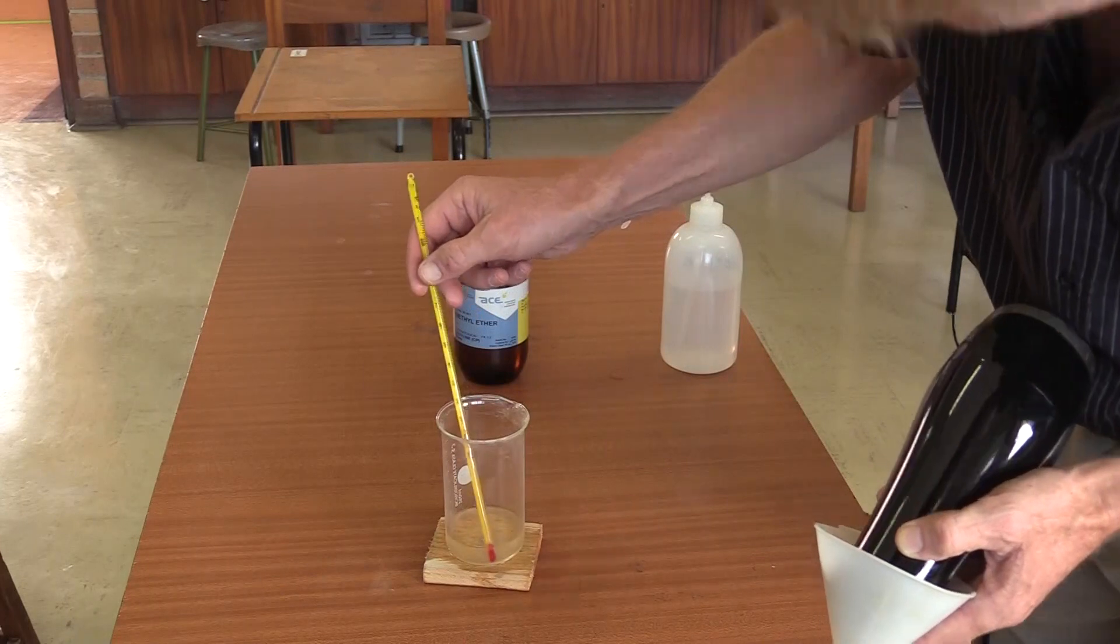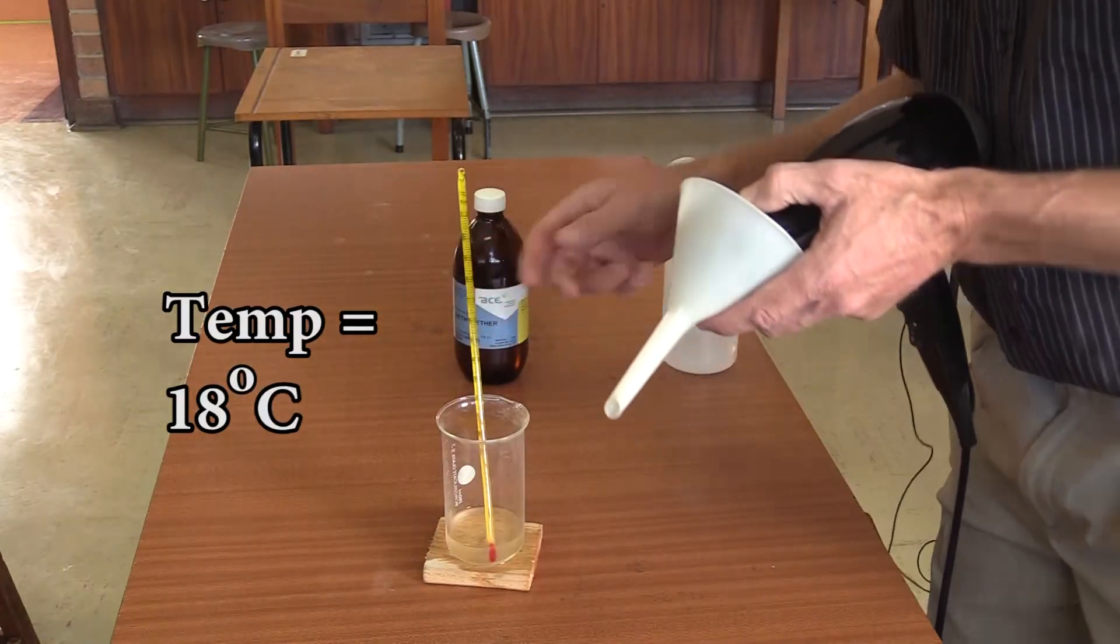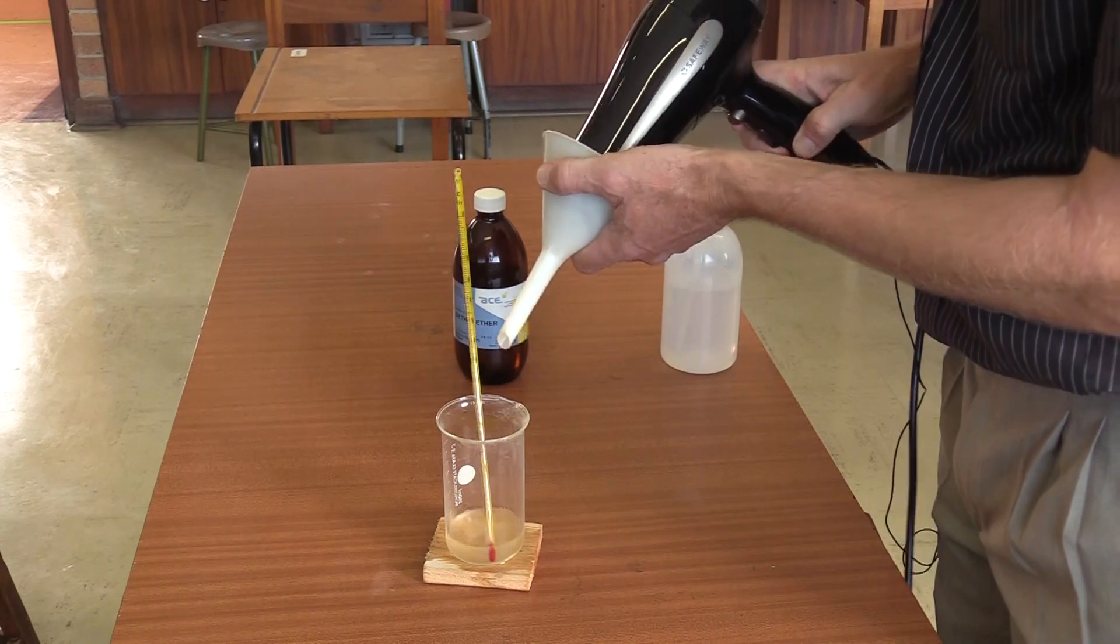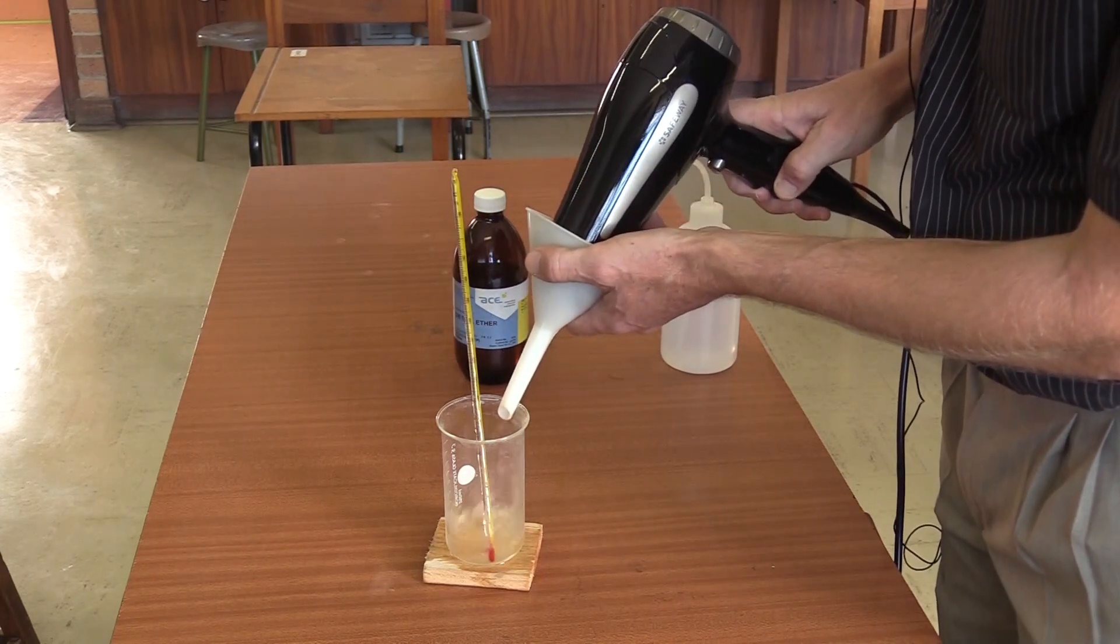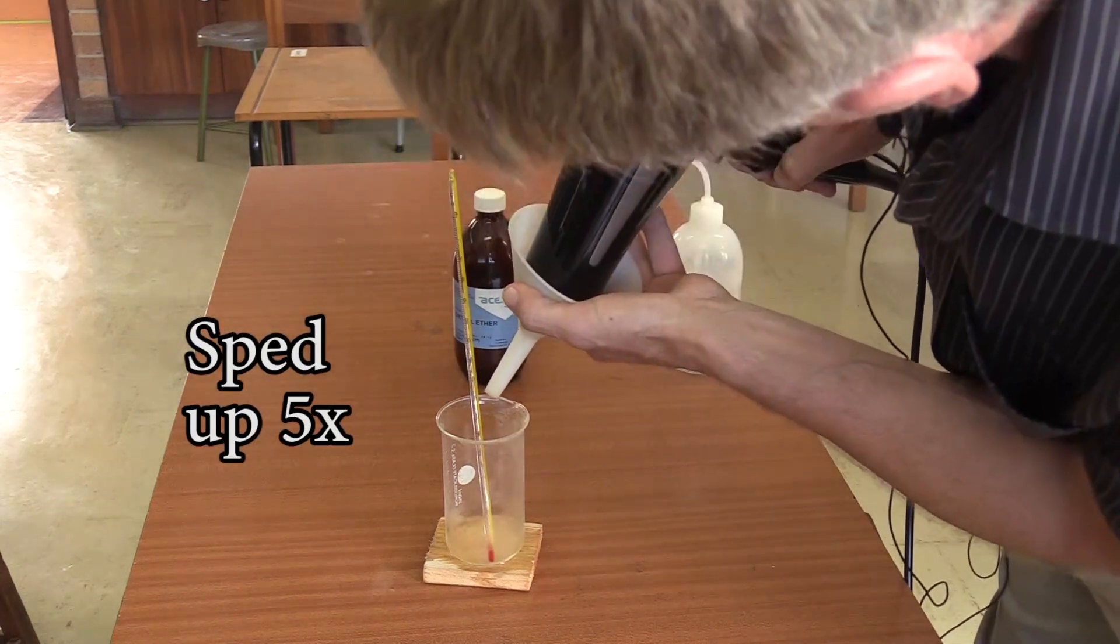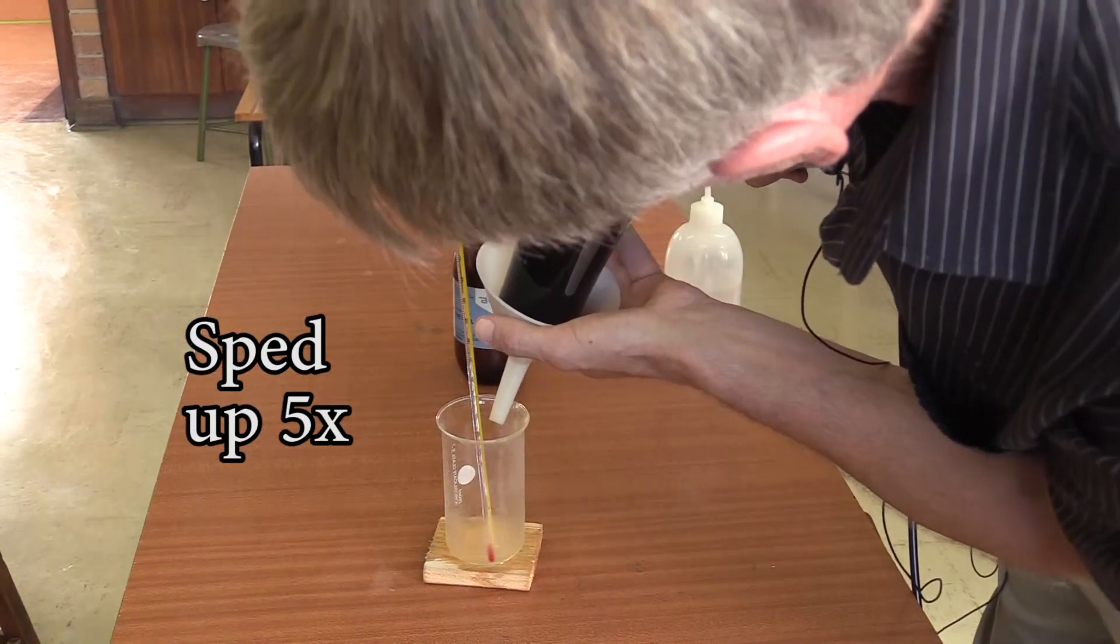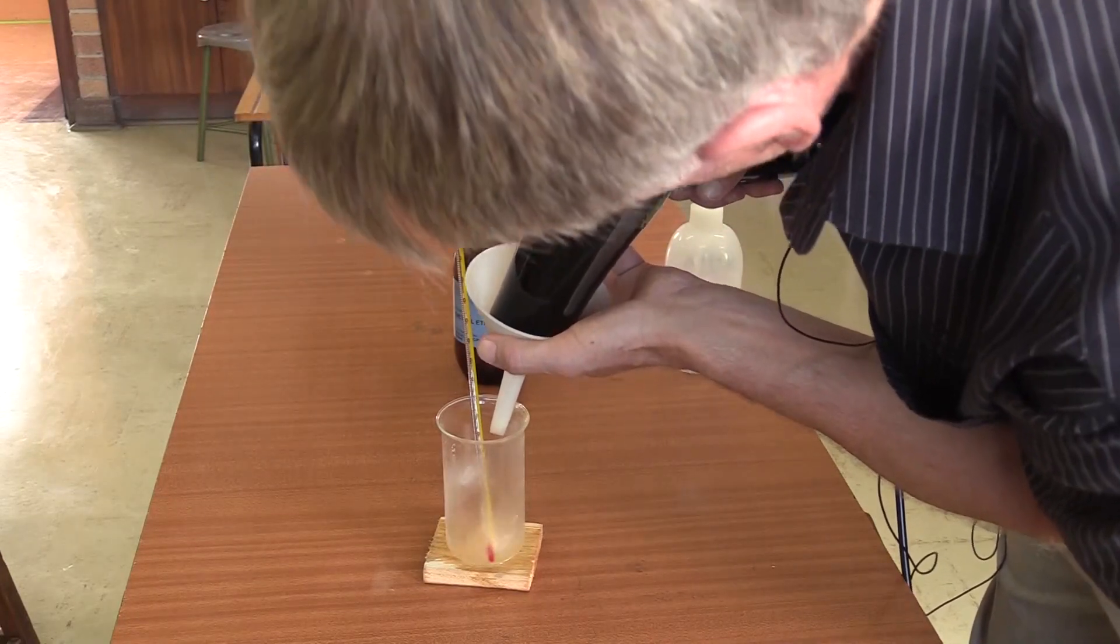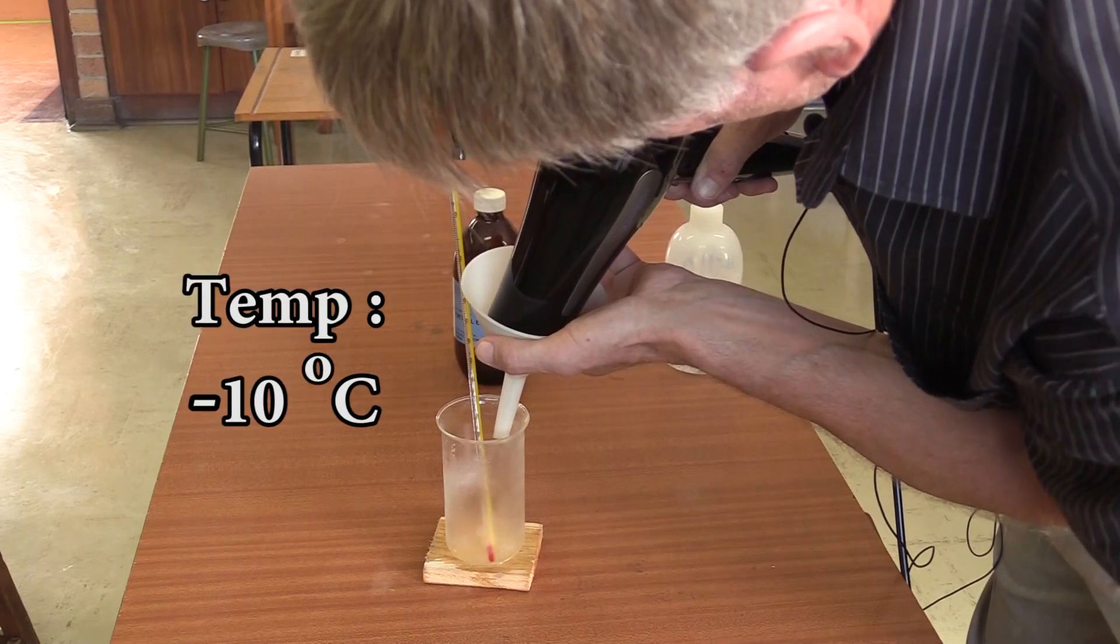The temperature of the ether is 18 degrees Celsius. The temperature is dropping. It's minus 10 degrees Celsius.